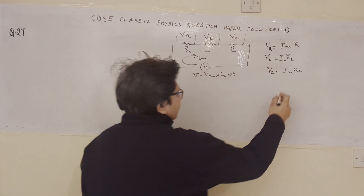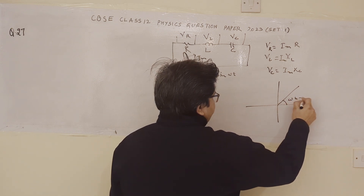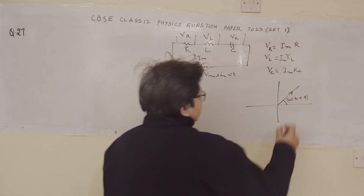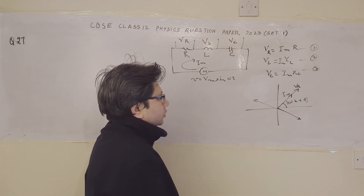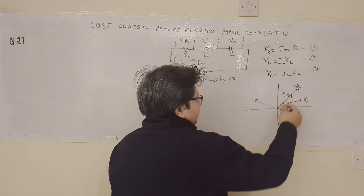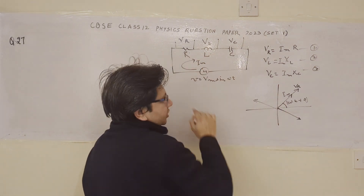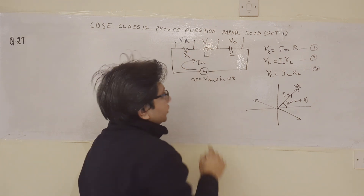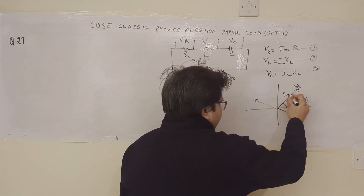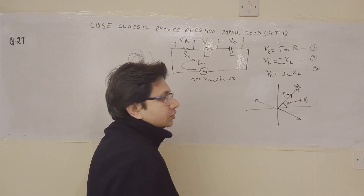Now we have to draw the phasor diagram. The phasor diagram looks something like this. Suppose this angle is (ωt + φ). This particular phasor represents the resistor — this line corresponds to the voltage across the resistor as well as the current through the circuit. Since the current Im is common in R, L, and C, and current and voltage are in the same phase for a resistor, this single line shows both the series current Im and V_R.